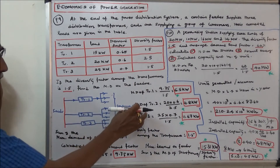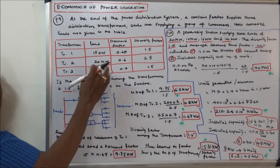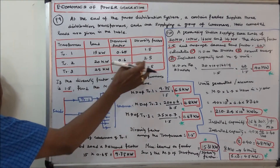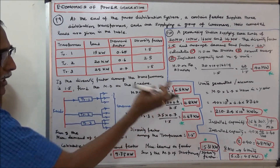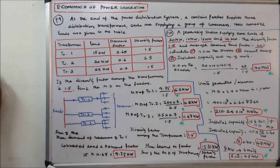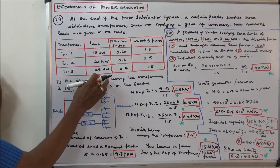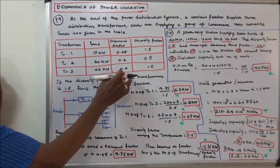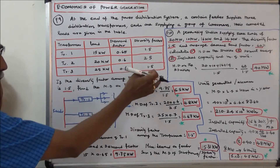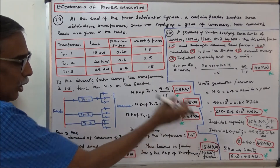Similarly, the maximum demand of transformer two is equal to 20 multiplied by 0.6 divided by 2.5, which equals 4.8 kilowatts. The maximum demand of transformer three is equal to 25 multiplied by 0.7 divided by 1.5, which equals 11.67 kilowatts.